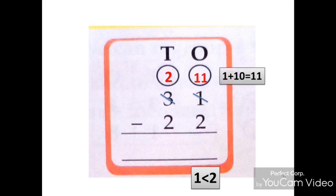Now subtract 1's place first. 11 ones minus 2 ones is equal to 9 ones. Write 9 under 1's column.